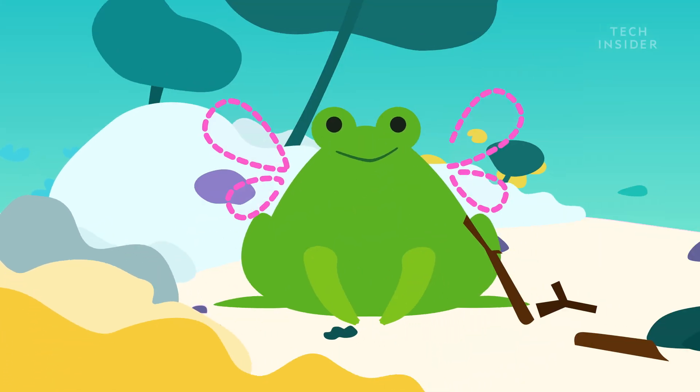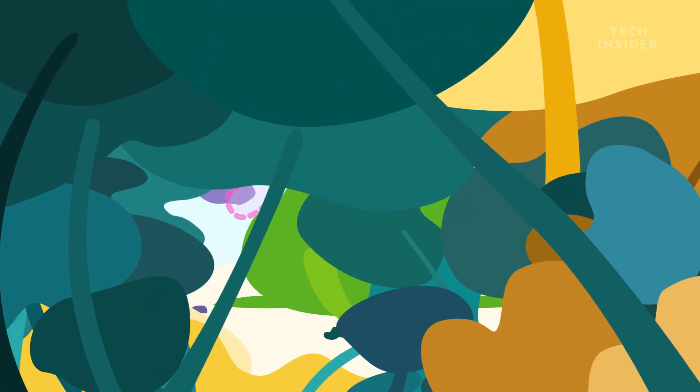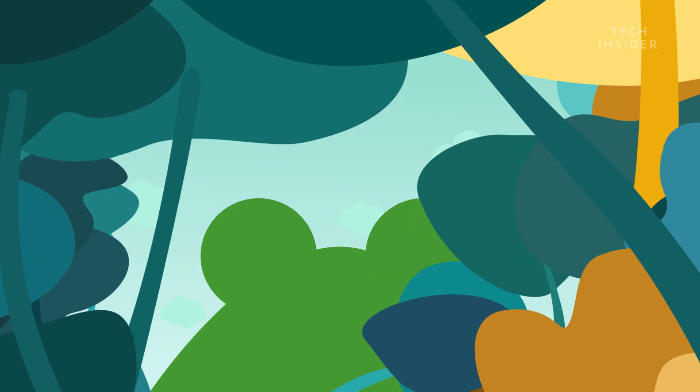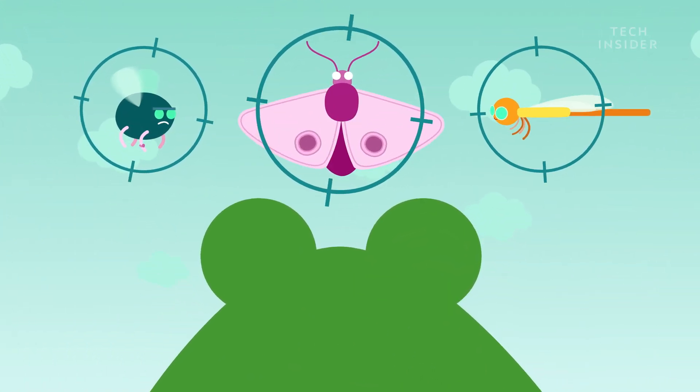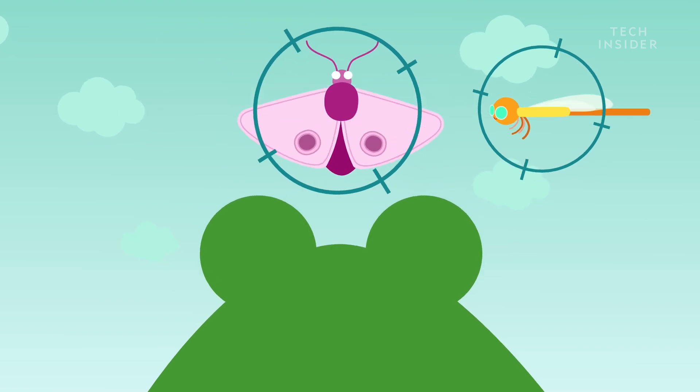You see, although frogs can't fly, many hunt some of the fleetest, most agile-winged animals, like flies, moths, and dragonflies. They don't even have to chase their meals. They just sit and wait.